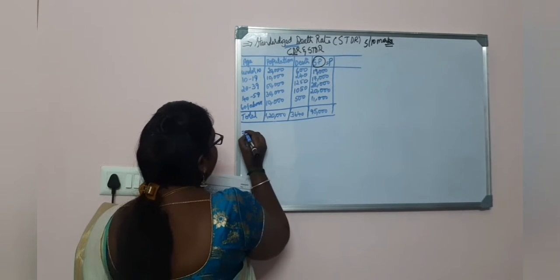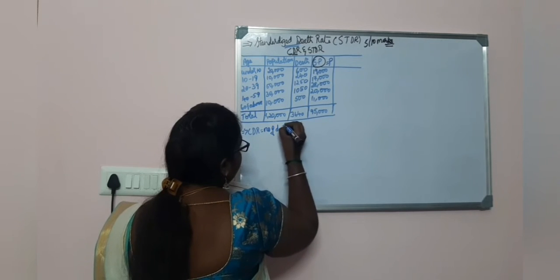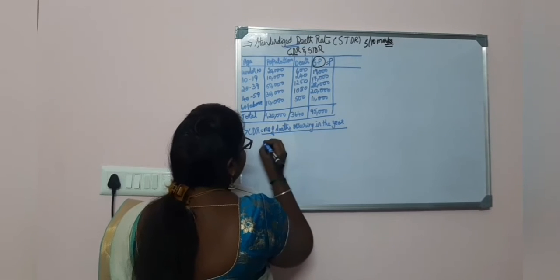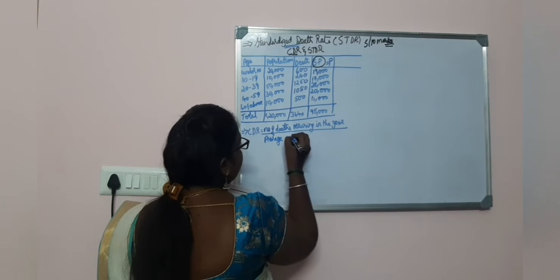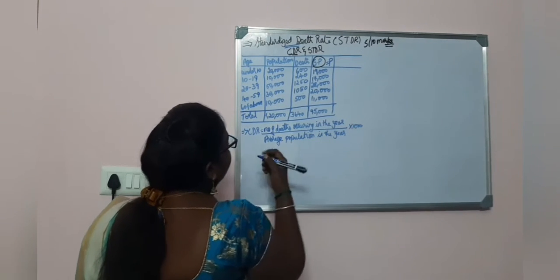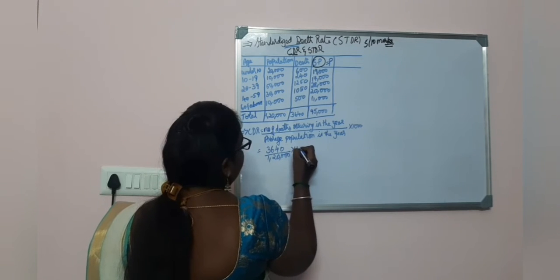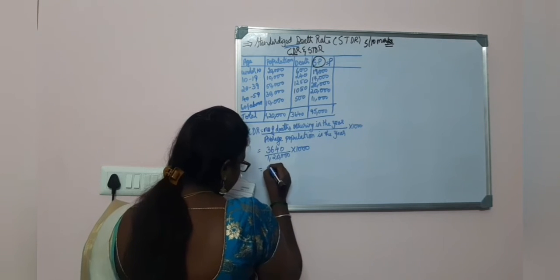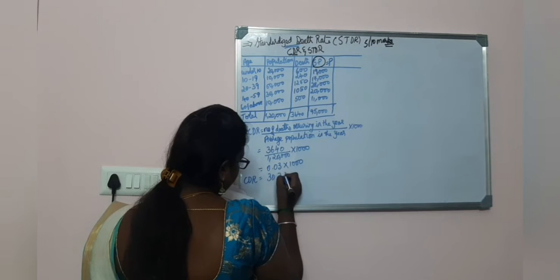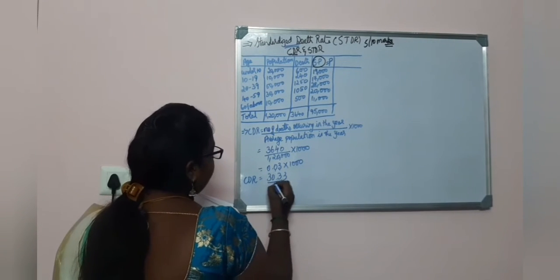First they have asked us to find CDR, that is crude death rate. CDR equals number of deaths in the year divided by average population in the year, multiplied by 1,000. So CDR equals 3,640 divided by 1,20,000 into 1,000. You get 0.03 into 1,000, so CDR equals 30.33.